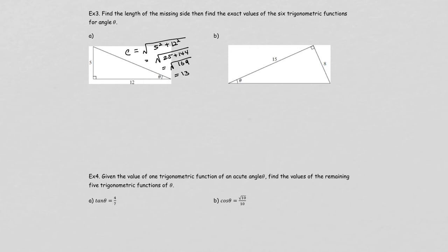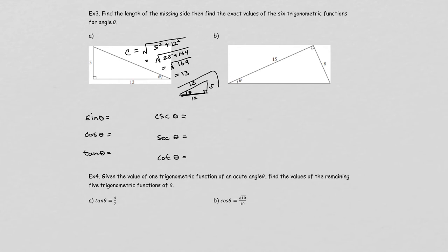Now with hypotenuse 13, opposite 5, and adjacent 12, we find all six trig functions: sine is 5 over 13, cosine is 12 over 13, tangent is 5 over 12. Then cosecant flips sine, secant flips cosine, and cotangent flips tangent.